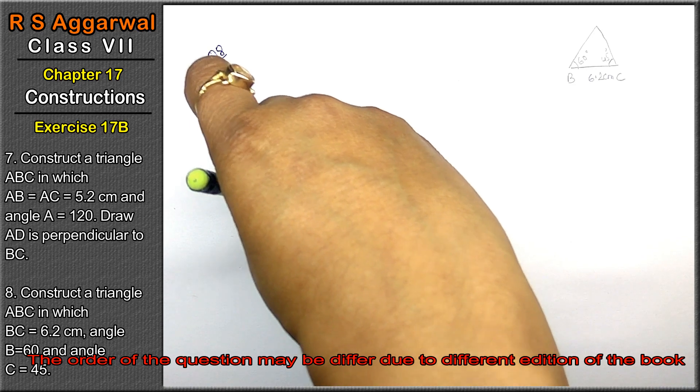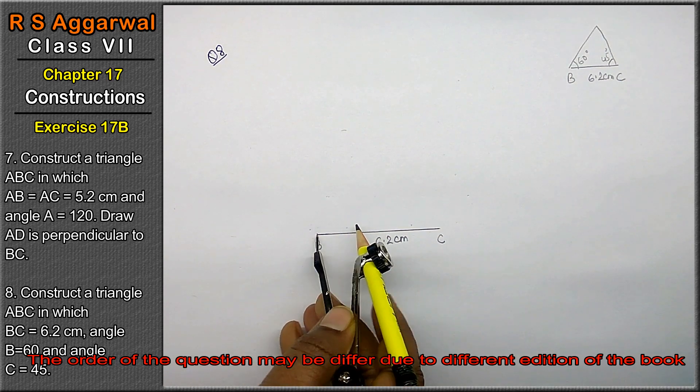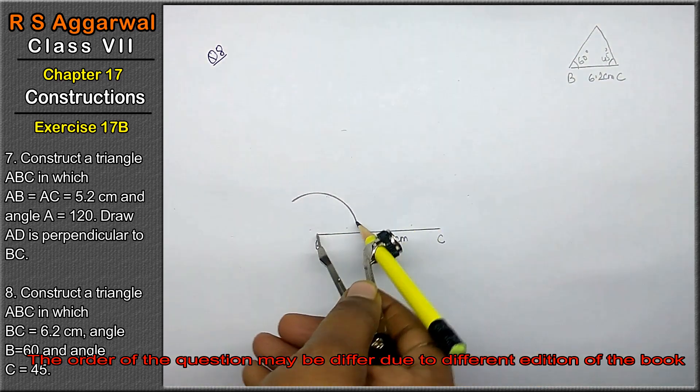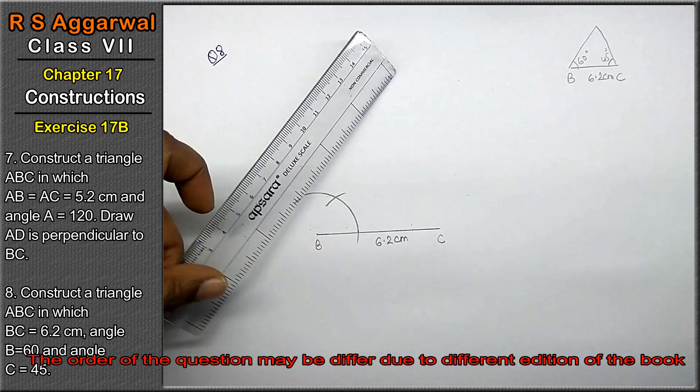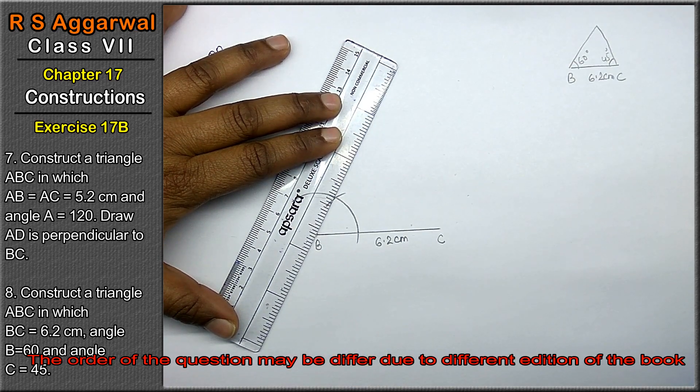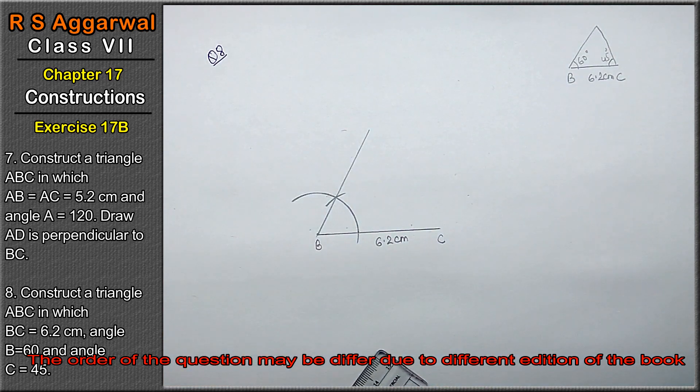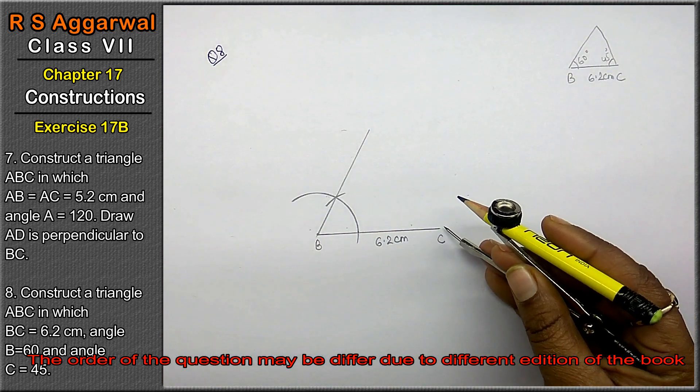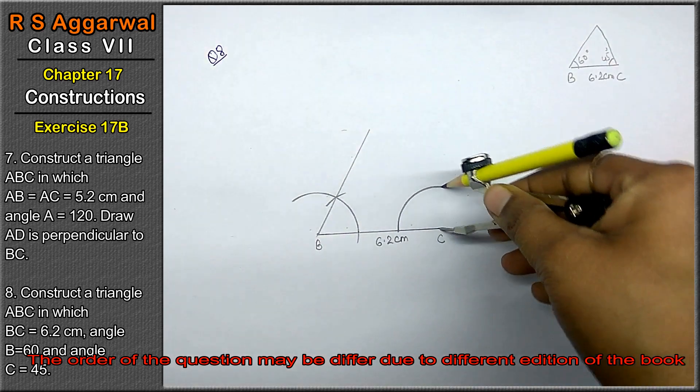We will make a 60 degree angle. This is B vertex and we will make angle B, AC.